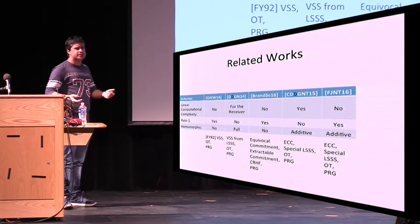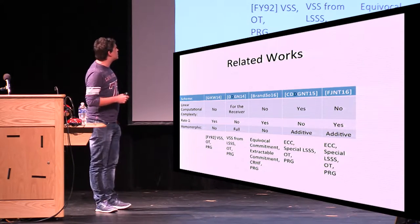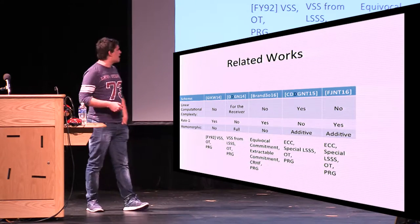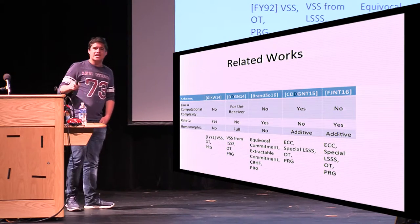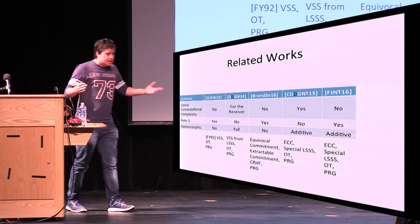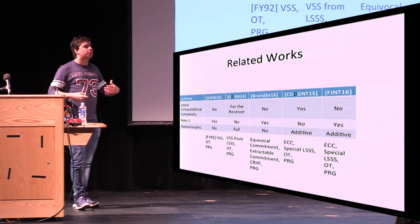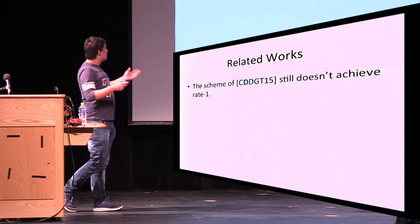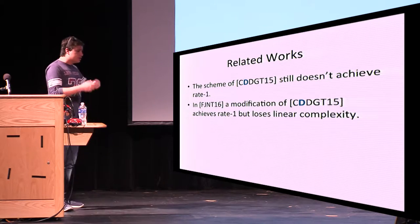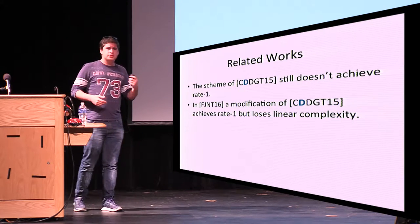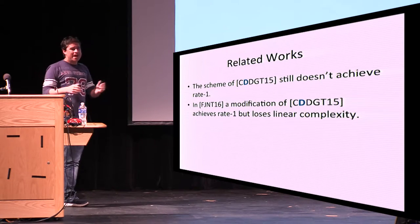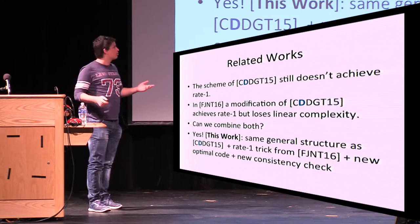Then, this year's TCC, Jesper Buus Nielsen, Tore Kasper Frederiksen, and Roberto Trifiletti, and Thomas Schneider Jakobsen showed how to get rate one and additive homomorphism, but they lost linear computational complexity. So we're here in a conundrum. Can you actually get all these properties at once in one single scheme? The scheme that we had last year in PKC doesn't get rate one. We get the other properties, but not rate one. Now, the scheme by Tore Frederiksen and others, this UCCC, gets rate one and homomorphism, but still they have bad computational complexity. Can we actually get both? Yes, we can. Let's make commitments great again.